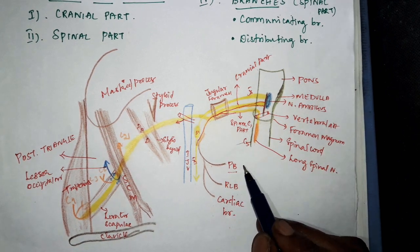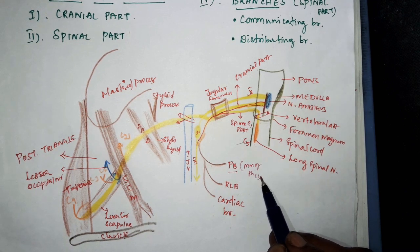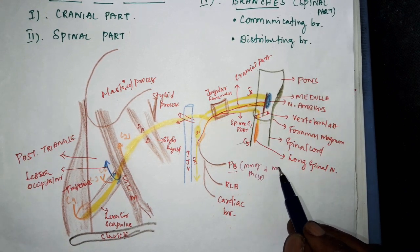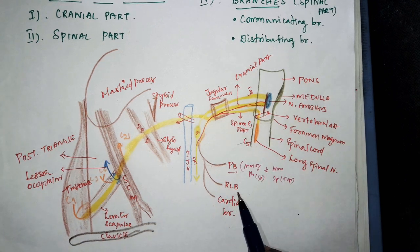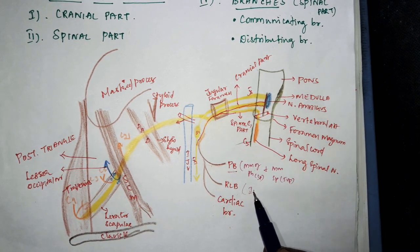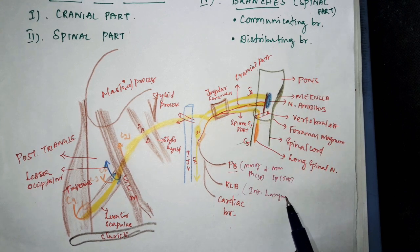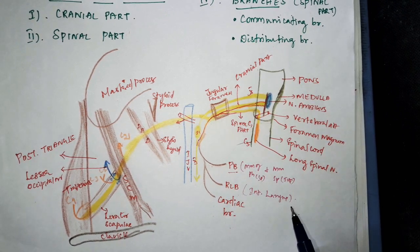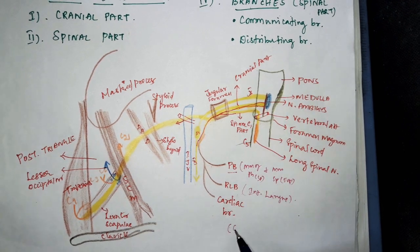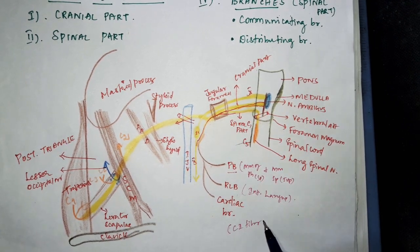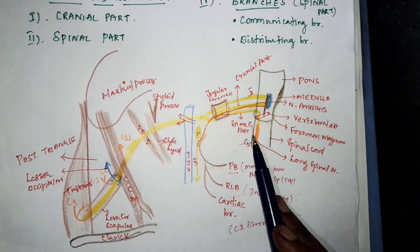Through the pharyngeal branch, it supplies the muscles of the pharynx except the stylopharyngeus muscle, and the muscles of the soft palate except the tensor veli palatini muscle. Through the recurrent laryngeal branch, it supplies the intrinsic muscles of the larynx except the cricothyroid muscle, which is supplied by the external laryngeal nerve. Through the cardiac branch, it supplies the cardio-inhibitory fibers over the heart.